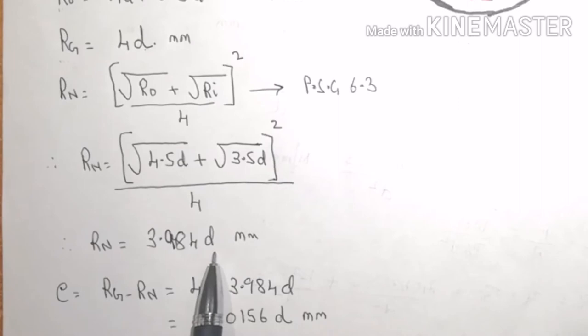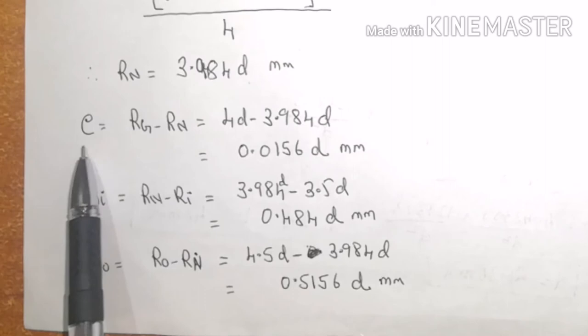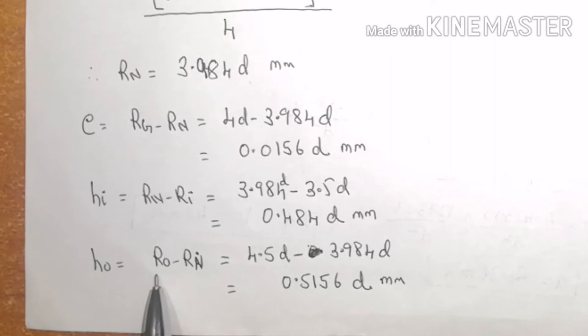Then finding out the remaining dimensions, that is E equals Rg minus Rn. I will get Hi equals Rn minus Ri, which is 0.484D, and lastly Ho equals Ro minus Rn, which is 0.5156D.